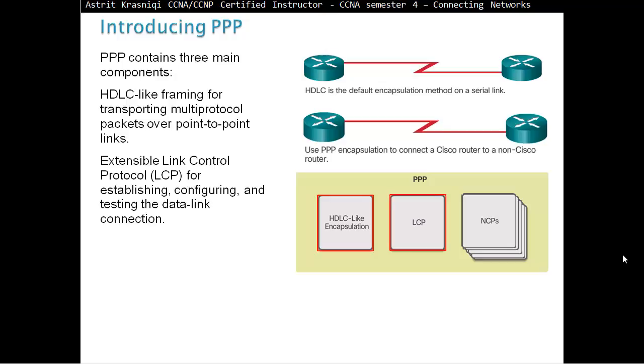Point-to-Point Protocol contains three main components. HDLC-like framing for transporting multi-protocol packets over Point-to-Point links. Extensible Link Control Protocol, LCP, for establishing, configuring and testing the data link layer, as well as data link connection, as well as terminates them.